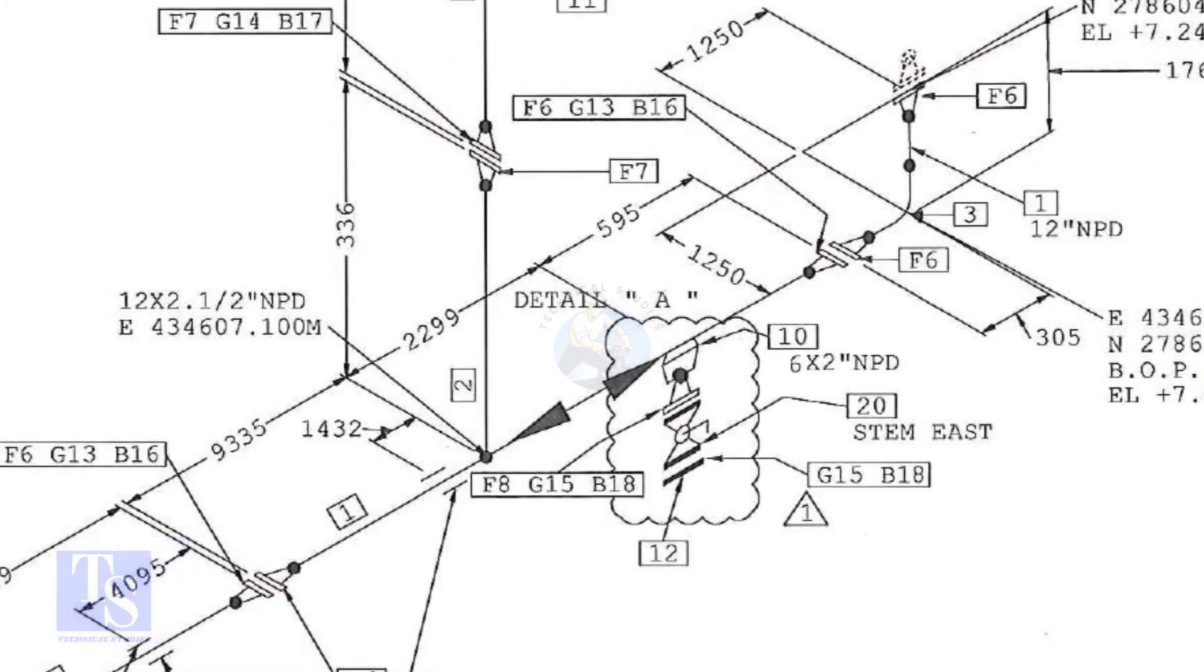The center of the weldolet is 595 millimeters away from the face of the flange. Now, we are going to mark this distance on a pipe with a flange fitted on it.